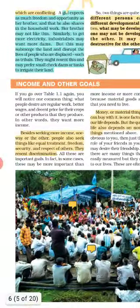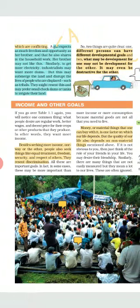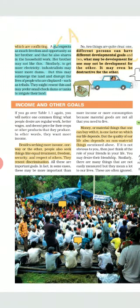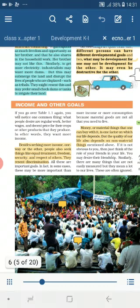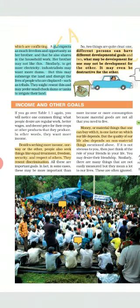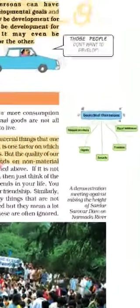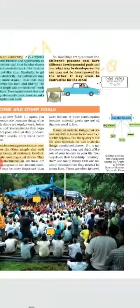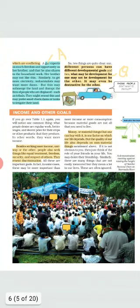Now the next topic is income and other goals. Income is a main objective in everybody's life — everybody works hard to earn well so they can have a better life and fulfill their needs. But income is not the only objective. If you have a very big house but you are not getting respect or freedom, do you want that big house? No. So along with income, other factors are equally important: respect, dignity, security, freedom, and equal treatment.